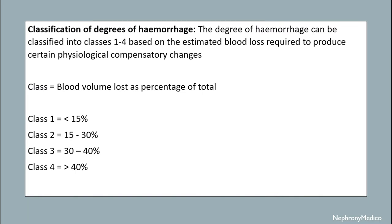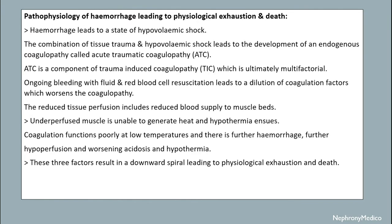Class 1 is less than 15% of blood volume lost. Class 2 is 15 to 30% of blood volume lost. Class 3 is 30 to 40% of blood volume lost. Class 4 is more than 40% of blood volume lost.